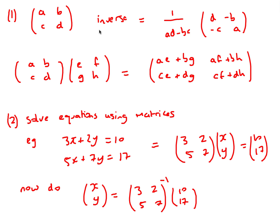Okay, next let's have a look at some matrices questions. These are useful for additional maths and are all taken from the IGCSE Cambridge syllabus. Just a quick recap: you need to find the inverse of a 2 by 2 matrix using the formula, multiply two matrices together, and solve equations using matrices by writing them in matrix form and using the inverse matrix.